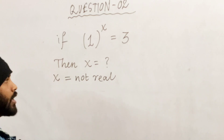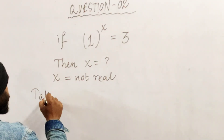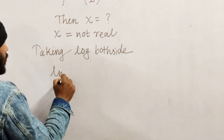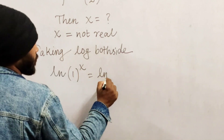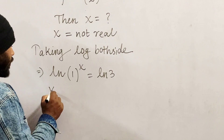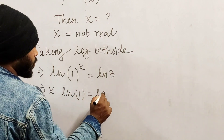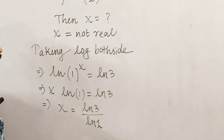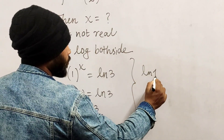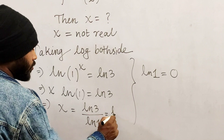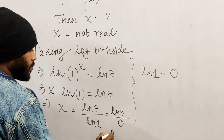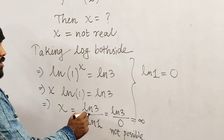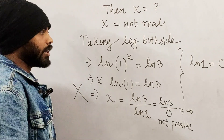What can we do here? Let's try taking log on both sides. We get x·ln(1) = ln(3), and therefore x = ln(3) / ln(1). But ln(1) = 0, so this becomes ln(3)/0, which is not possible.